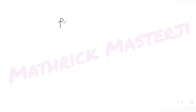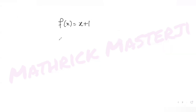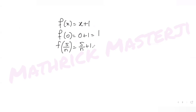We are given f of x equals x plus 1. Let's figure out all the function values individually first. f of 0 gives 0 plus 1, which is 1. f of 5 over n gives 5 over n plus 1. f of 10 over n gives 10 over n plus 1.